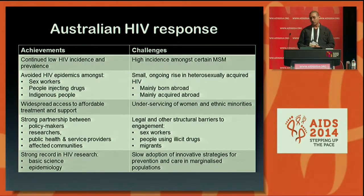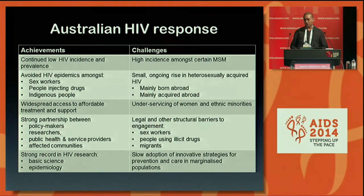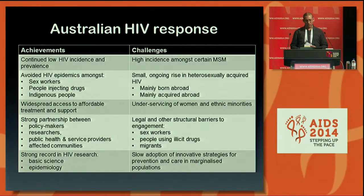Australia has an interesting position in the HIV epidemic globally — a very small, very low prevalence country, but with quite a successful response overall, particularly among key populations. Among female sex workers, people injecting drugs, and indigenous people, the HIV epidemic is very small by global standards. The prevalence amongst indigenous people is the same as the rest of the population, and prevalence amongst sex workers and people injecting drugs is extremely low — we think a result of the strong partnership between affected communities and government and health services. Access to treatment is widespread and generally affordable, with a strong record in basic science and epidemiological HIV research.